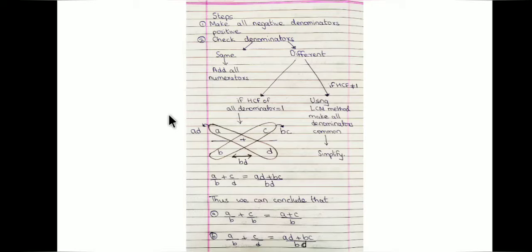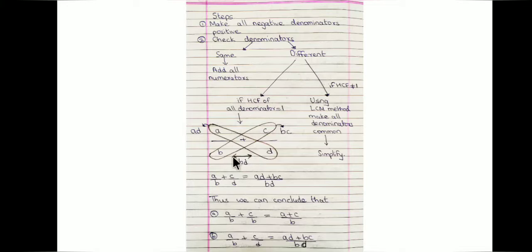The required rational number will be the sum of all the numerators over the common denominator. Now, if the denominators are different and they do not have any common factor — that means the HCF of all the denominators is equal to 1 — you will add the two rational numbers a/b and c/d by writing the first rational number on the left-hand side and the second on the right-hand side.